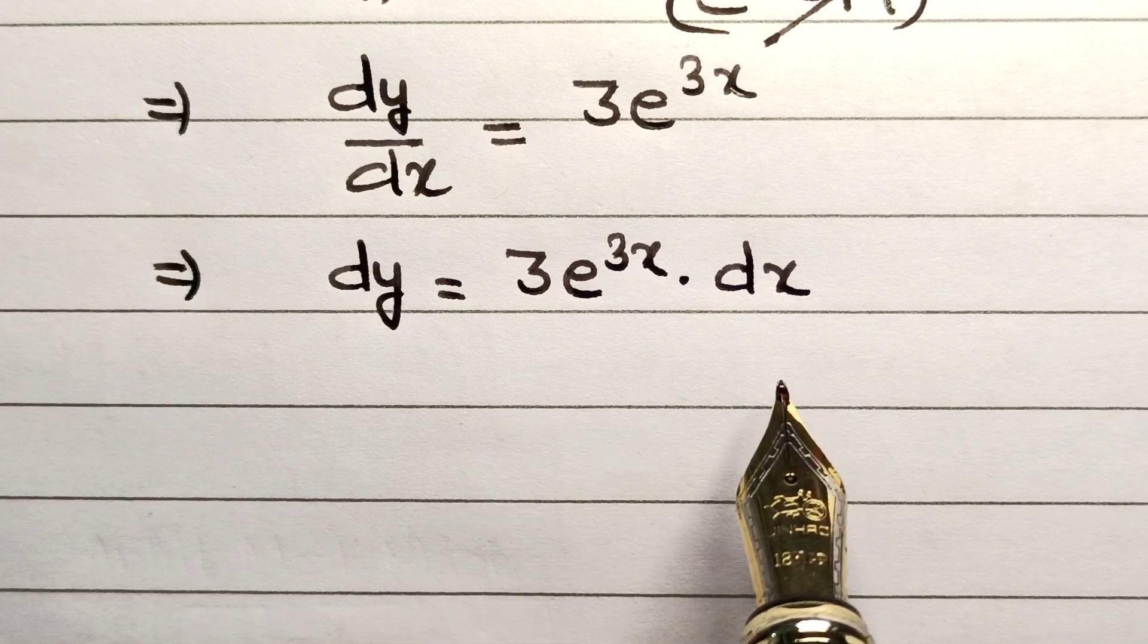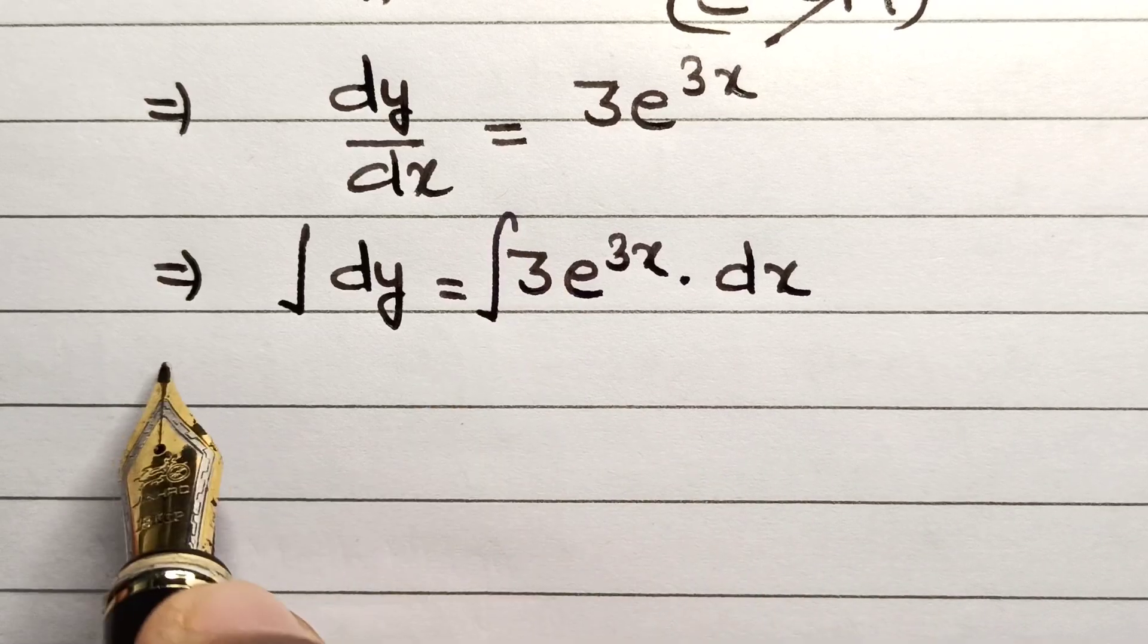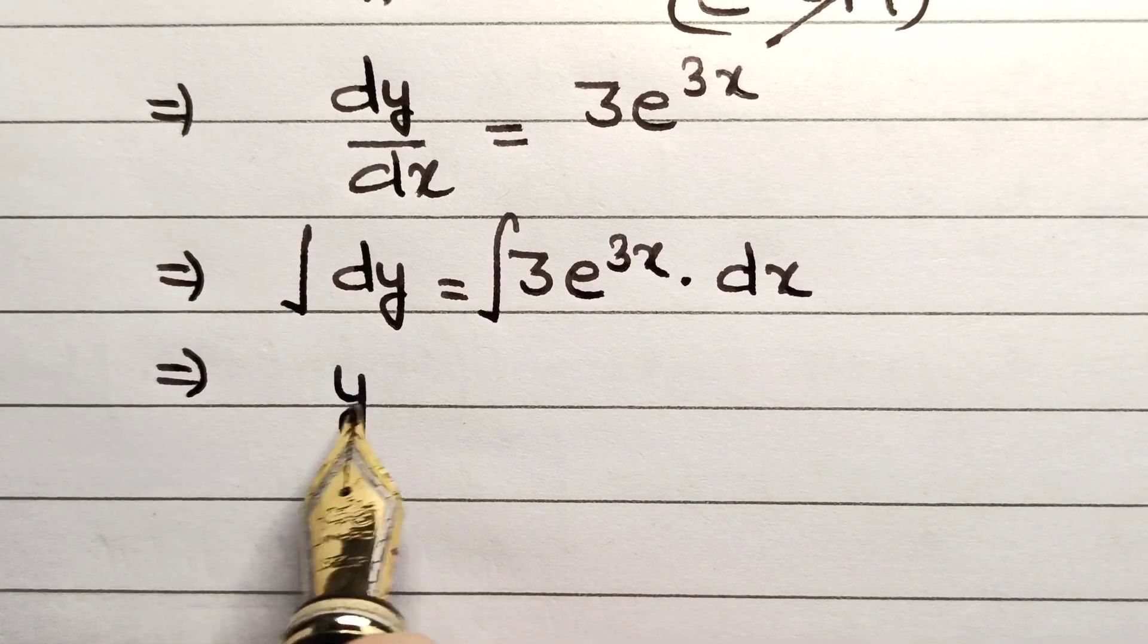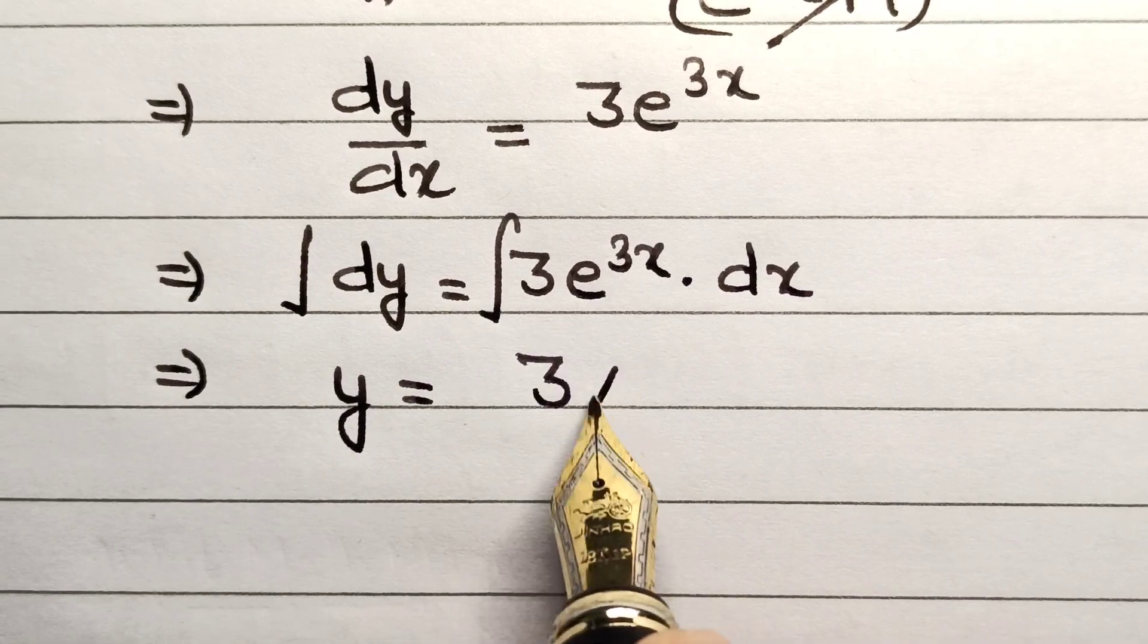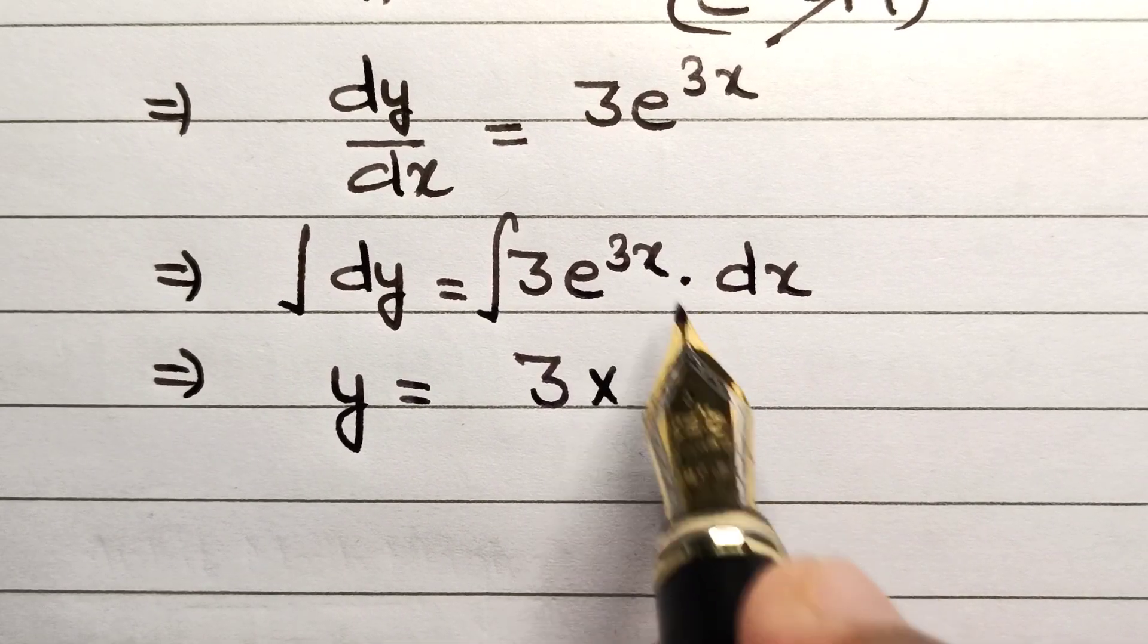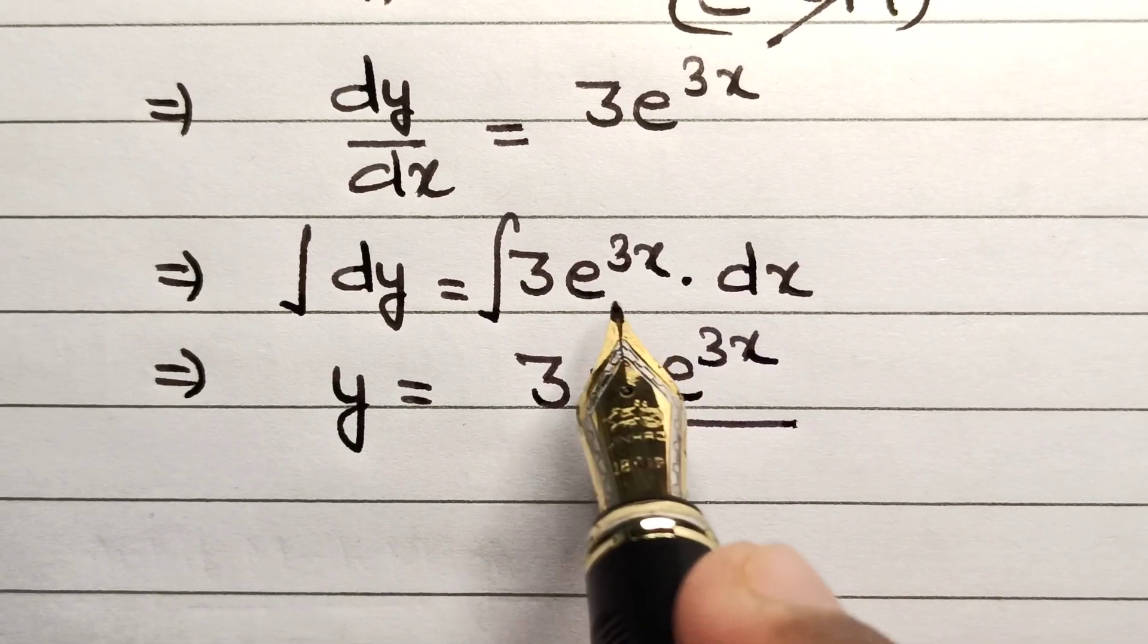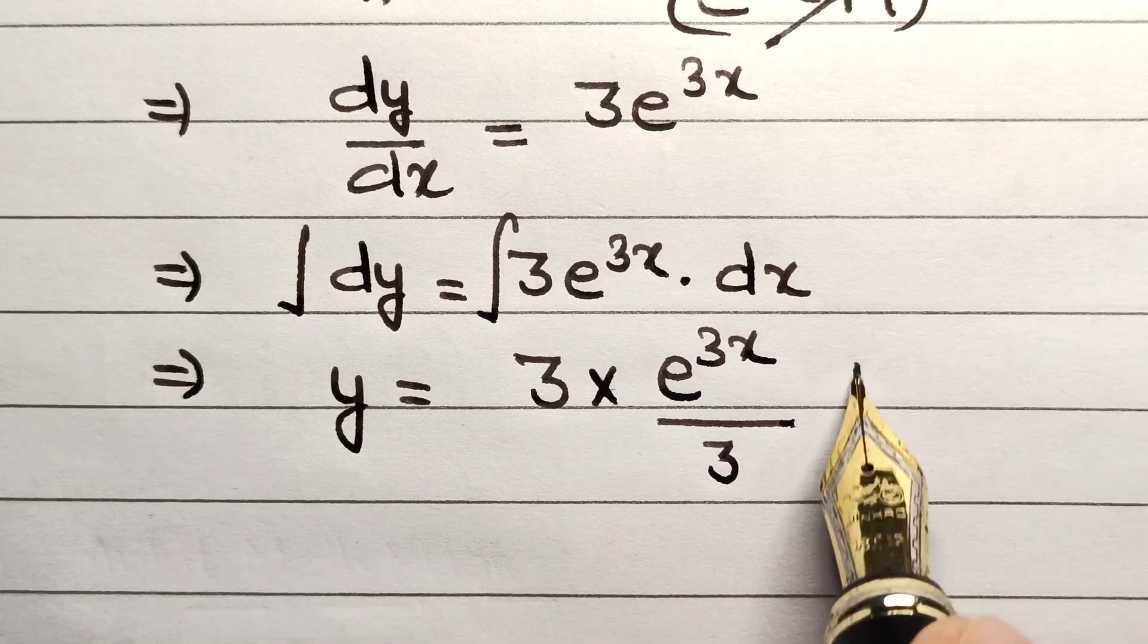All that is left is to integrate this entire equation. The integration of dy is y. Since 3 is a constant, it comes out of the integration sign. Integration of e^(3x) is e^(3x) divided by the differentiation of 3x, which is 3, plus c.